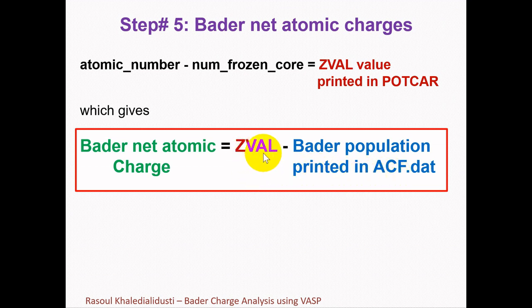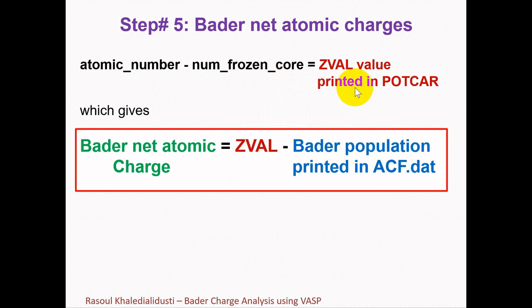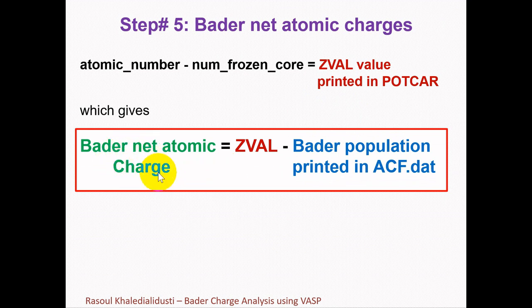from the ZVAL value printed in the POTCAR file, which is the atomic number minus the number of frozen core electrons. You can find ZVAL in your corresponding POTCAR file. By subtracting the Bader population printed in ACF.dat from the ZVAL from the POTCAR file, you can find the Bader net atomic charge for each atom in your system.